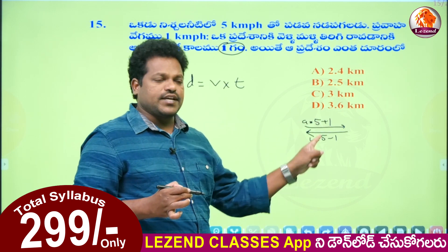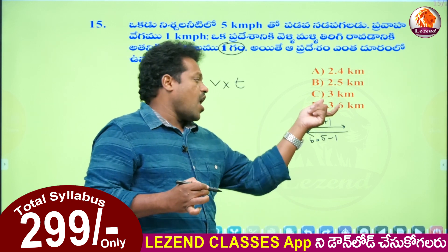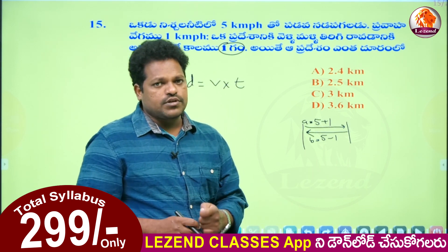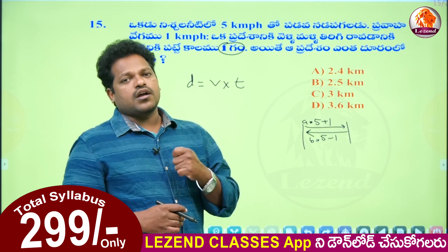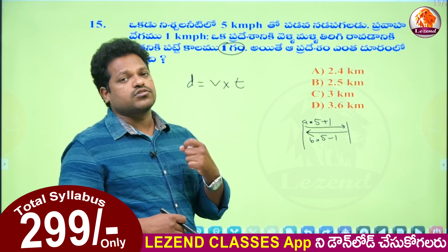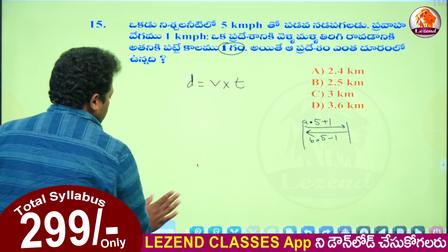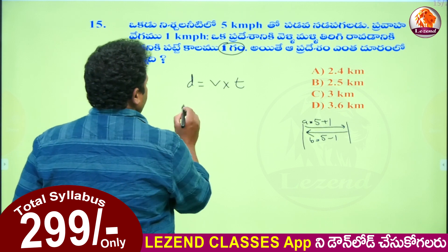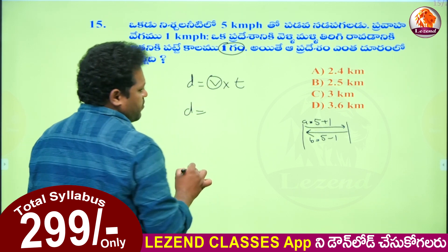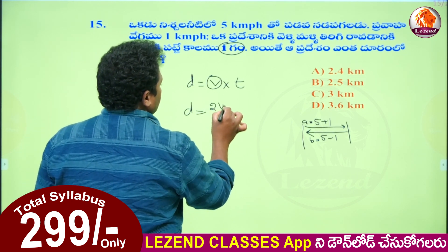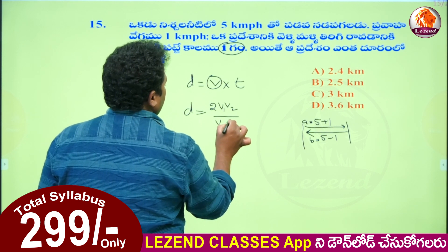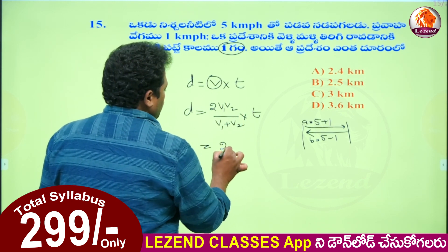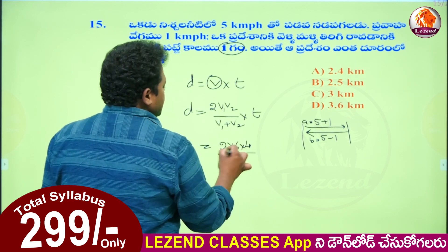So, A is equal to 5 plus 1, B is equal to 5 minus 1, that is 6 and 4. So the formula for the boat is equal to 2xy by x plus y. Then d is equal to 2v1v2 by v1 plus v2.